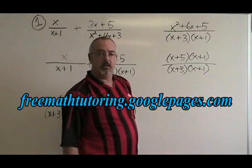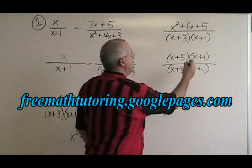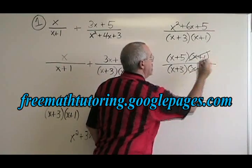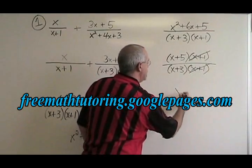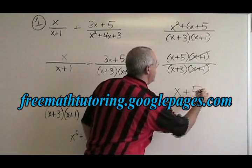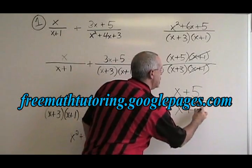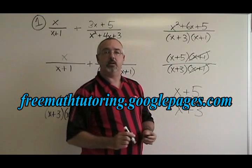And then we have to see if anything will cancel. The x plus 1 on the top and the x plus 1 on the bottom cancel. Our final answer is x plus 5 over x plus 3. This is how you add algebraic fractions.